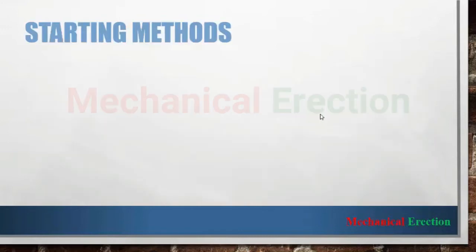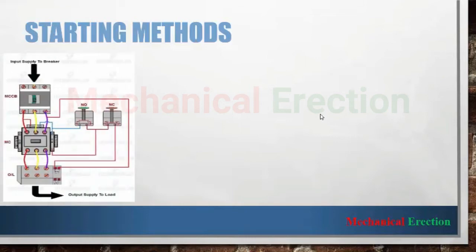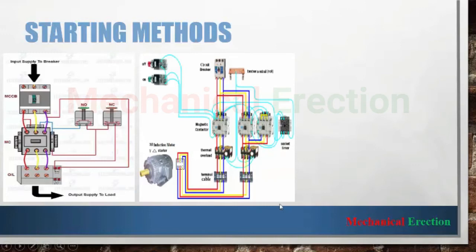Now I am discussing the starting methods of electric motors. There are different starting methods, but I will discuss a few here. First is direct online, which is the most common in the practical field to start motors. This is for either star or delta connection at the motor terminal, where the motor is connected through the incoming circuit breaker, then the magnetic contactor, then the overload relay or push button which indicates the start and stop status of your motor.